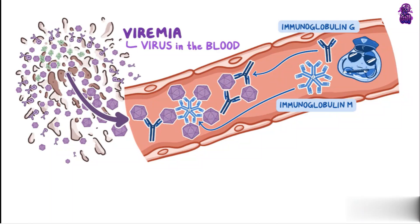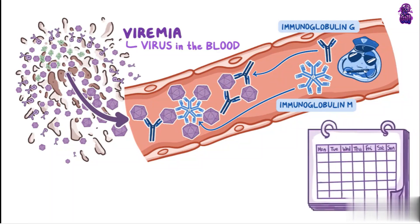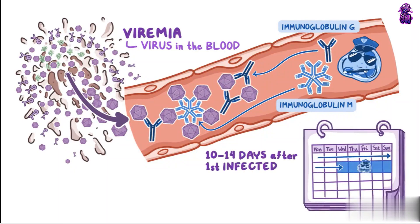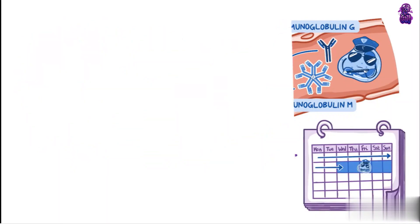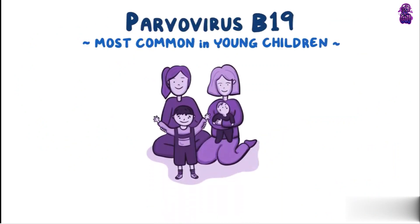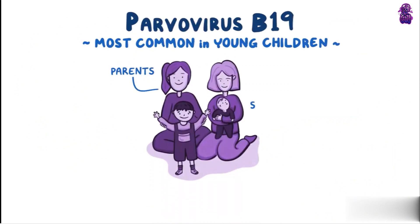For individuals with a functioning immune system, this typically happens between 10 and 14 days after first becoming infected with the virus. Parvovirus B19 is most common in young children and those who live or work with them, like parents, siblings, and daycare workers.